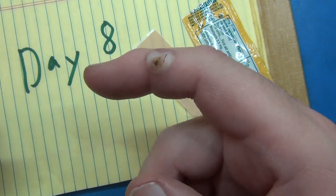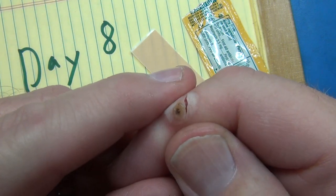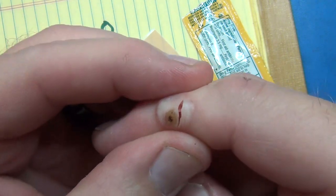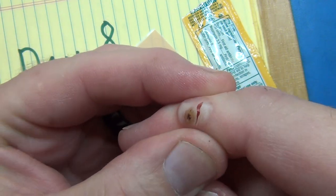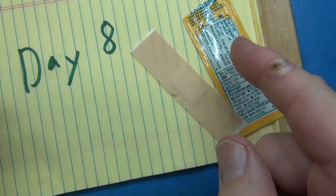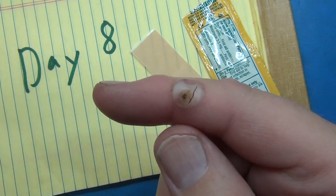Well day eight and it tore when I was doing some yard work and basically just blood came out. But I will get some Neosporin on it, a band-aid, let her heal a little bit more. Soon I'll be chopping her out.